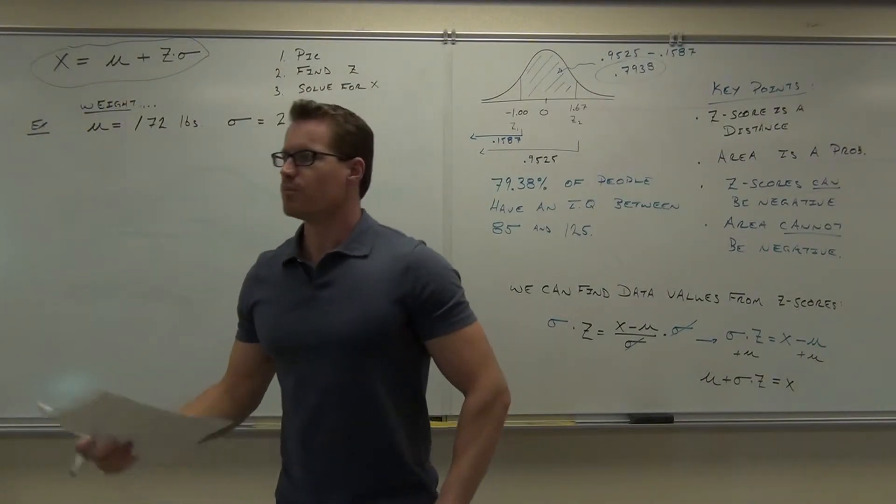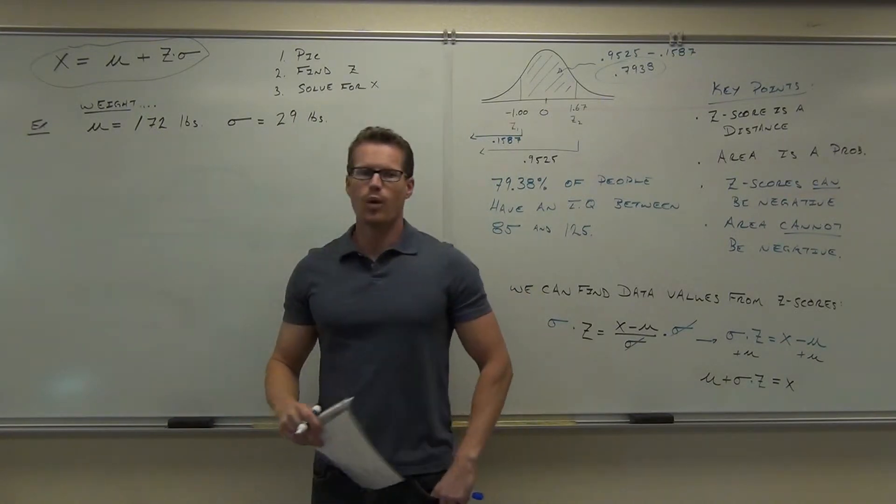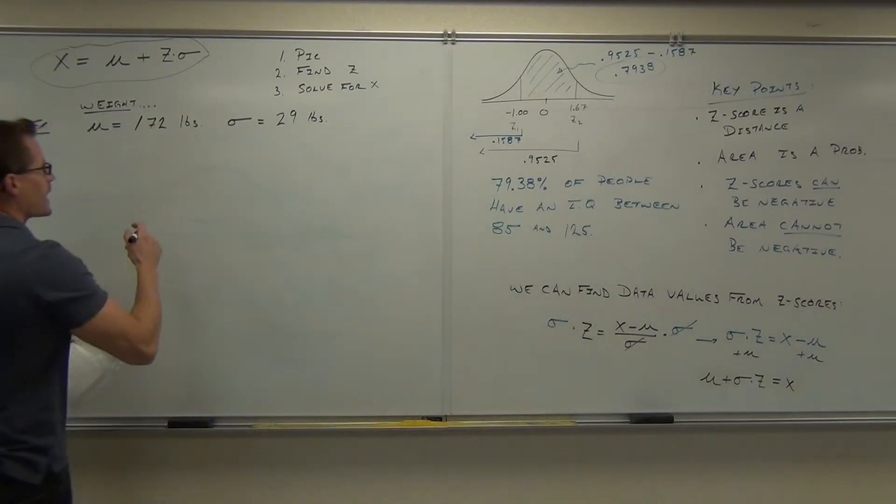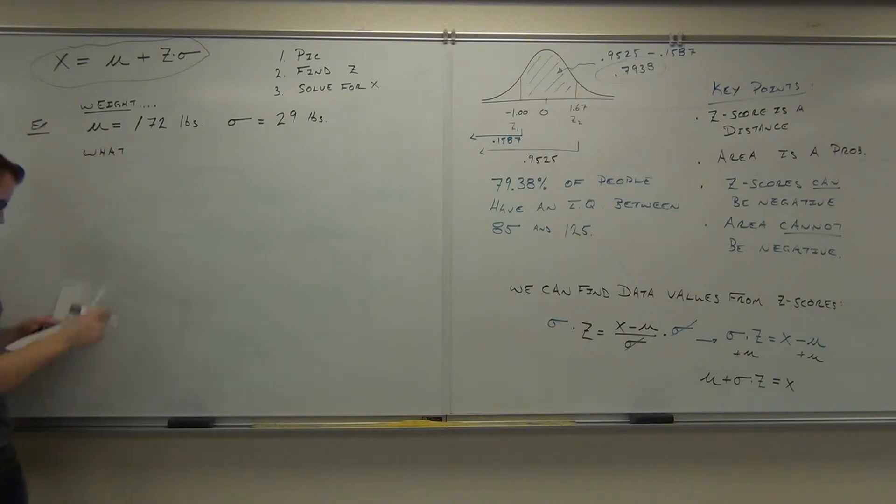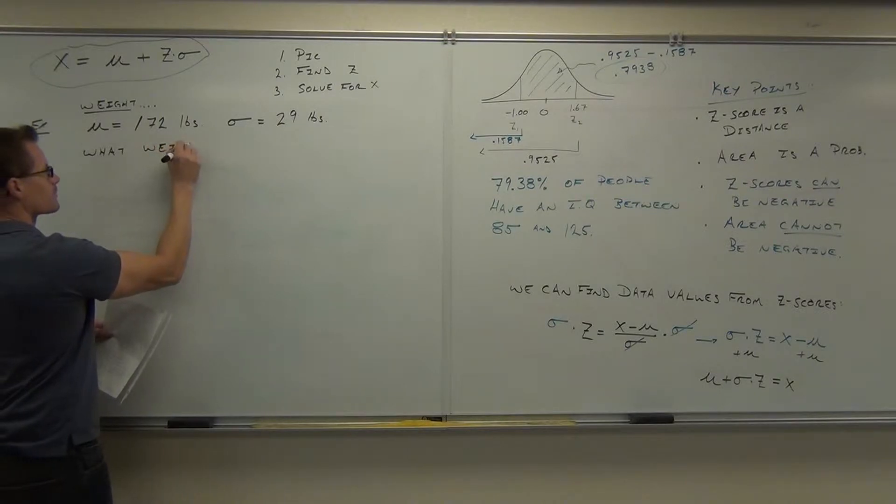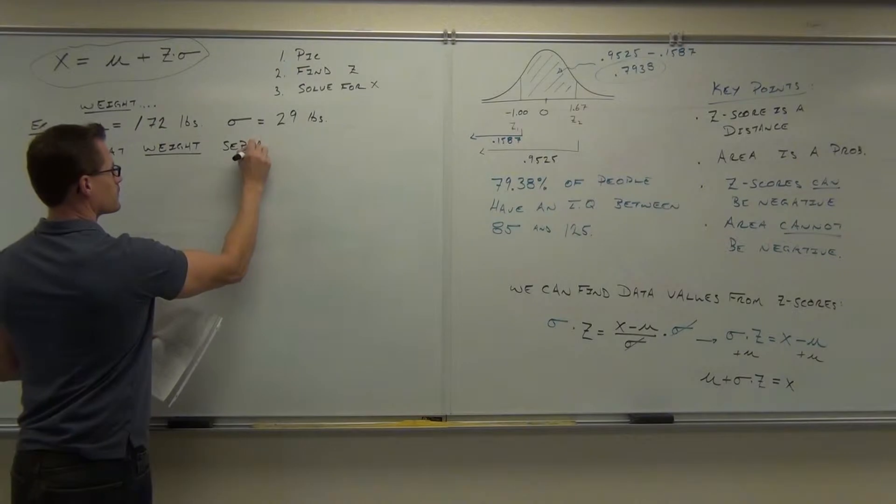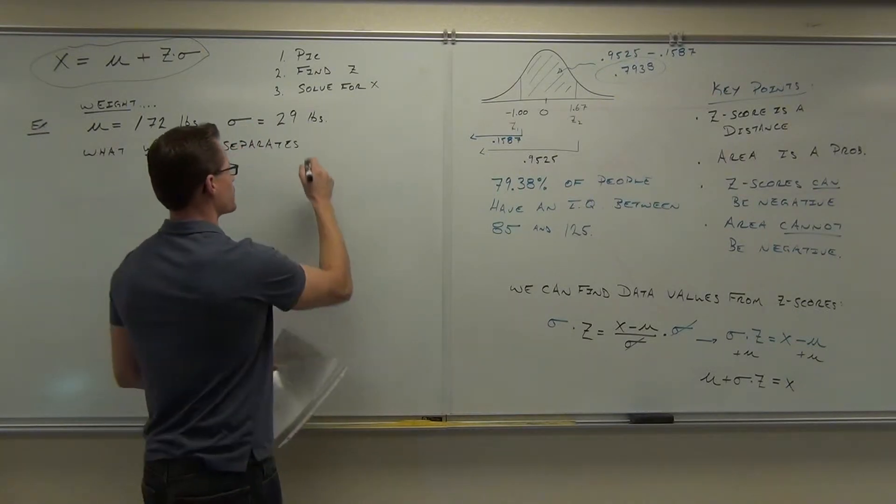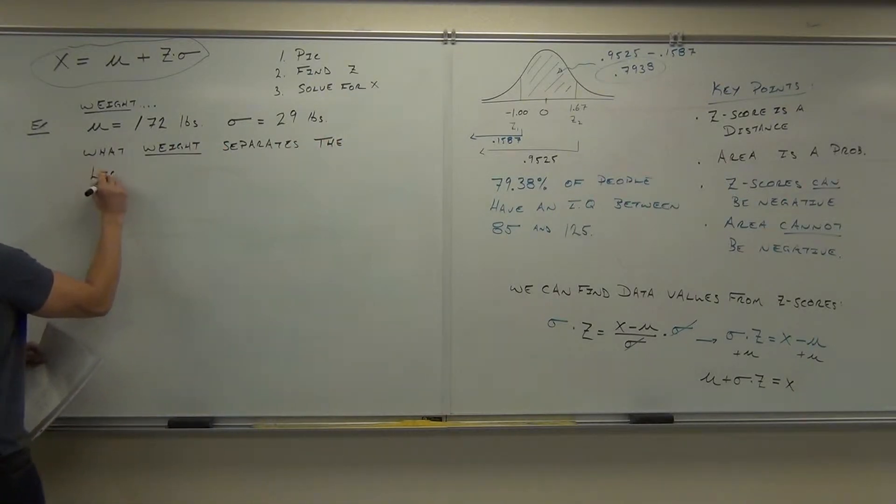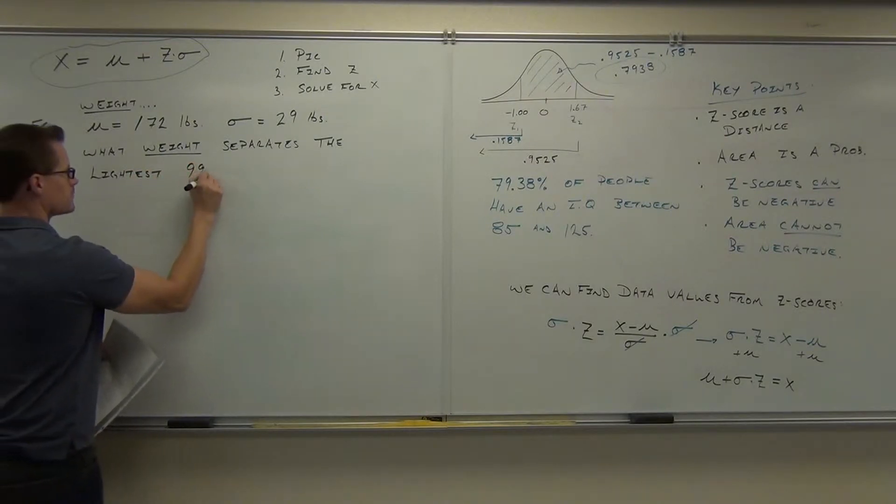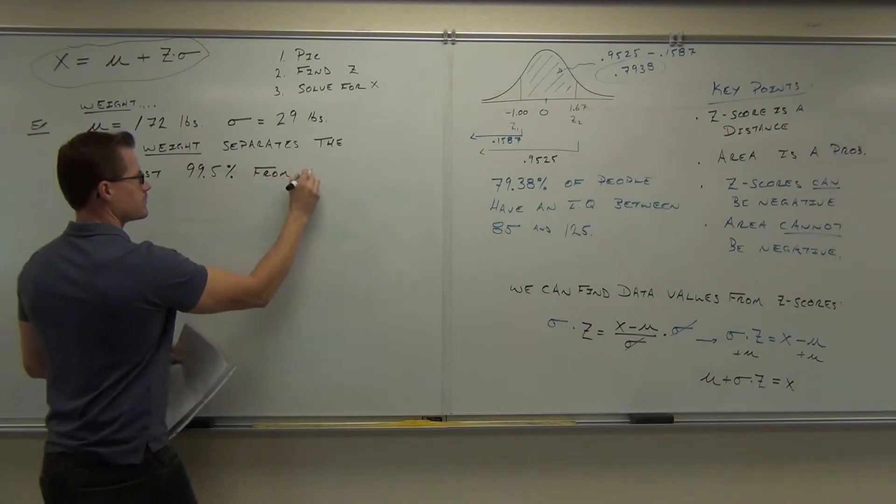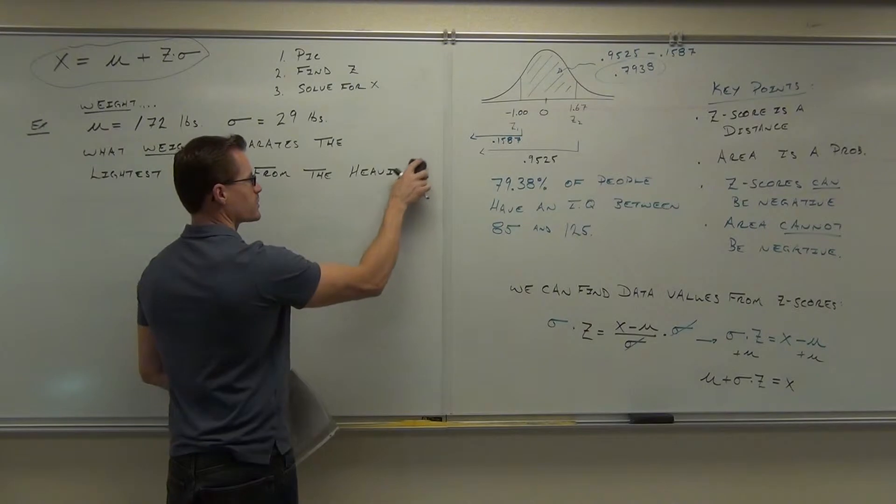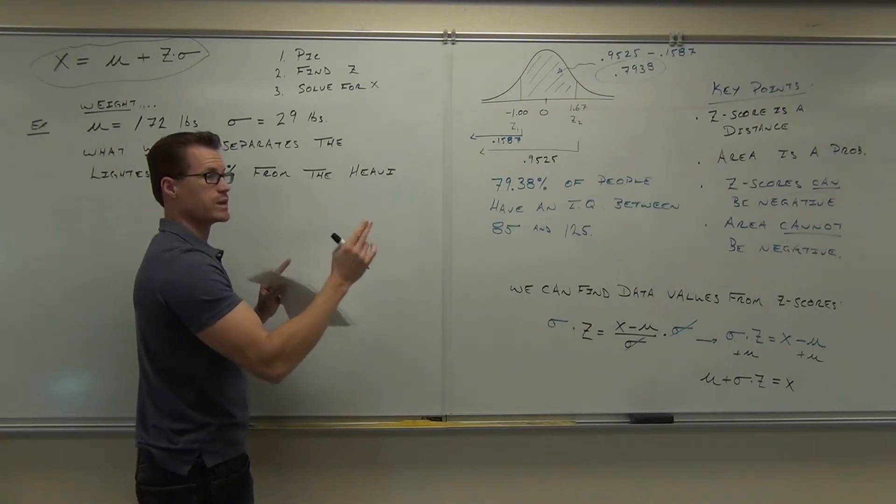Here's how your questions are going to be worded. To go backwards and actually find a data value, one way you can see this is, what data value separates the lightest, in this case lightest, or shortest, or smallest, or least, from greatest. So in our case, I'm going to ask you, what weight separates the lightest 99.5% from the heaviest 0.5%?